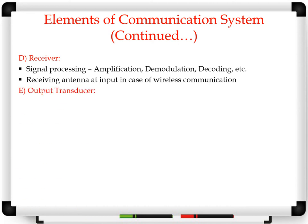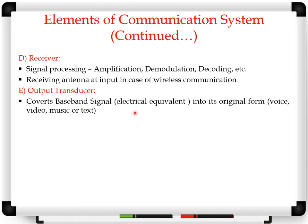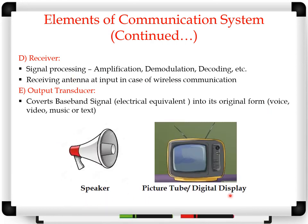Next is the output transducer. It converts the electrical equivalent, that is the baseband signal, back into its original form — which can be voice, video, music, or text. Examples of commonly used output transducers include a speaker, which converts electrical information into voice format, and a picture tube or digital display, as found in a television, which converts the electrical signal into picture or video format.